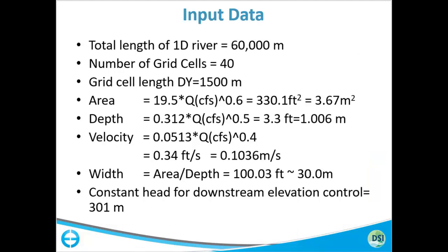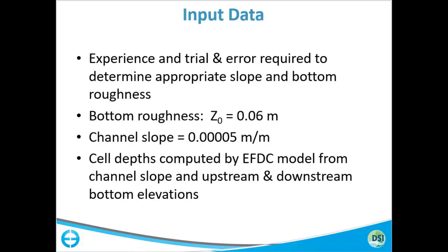Since flow is coming from upstream continuously at 2.83 CMS, it will continually go out of the domain from the downstream. If you want to use a flow boundary, it would be the summation of all flows: upstream plus wastewater treatment plant equals 3.16 CMS. For input data, bottom elevation and roughness are especially trial and error based on literature values. We are going to use a bottom roughness of 0.06 meters.